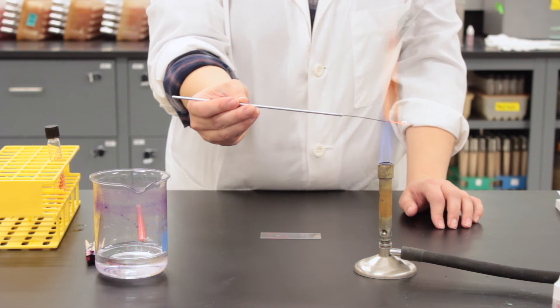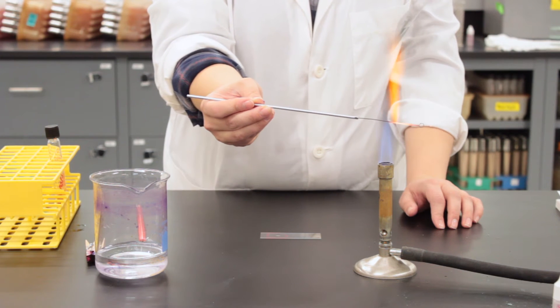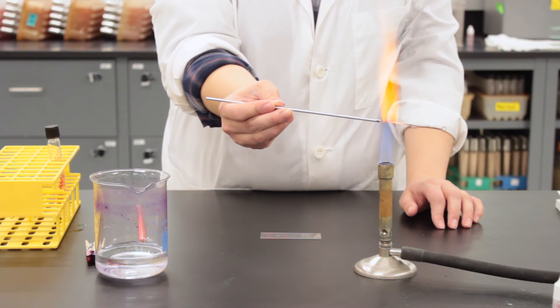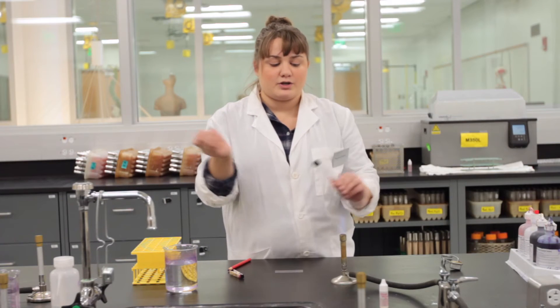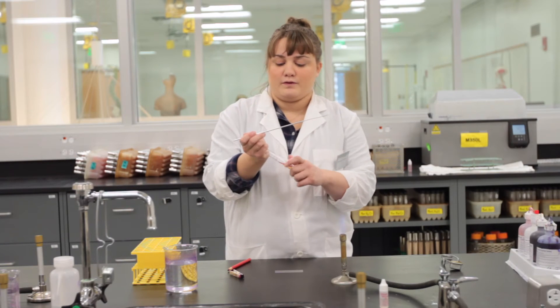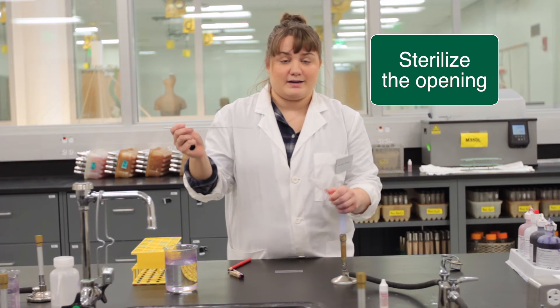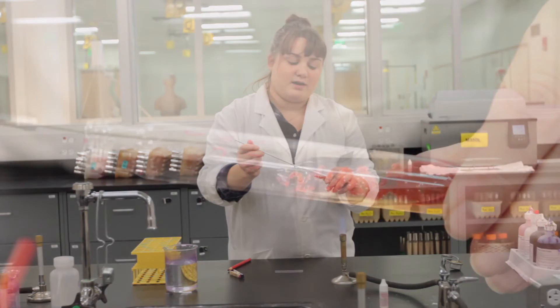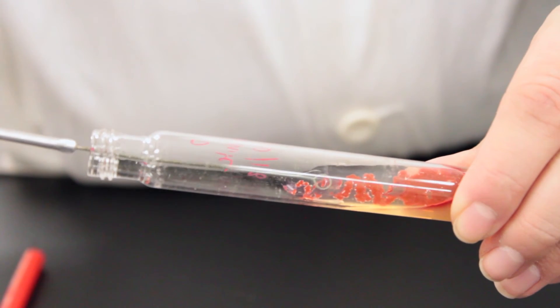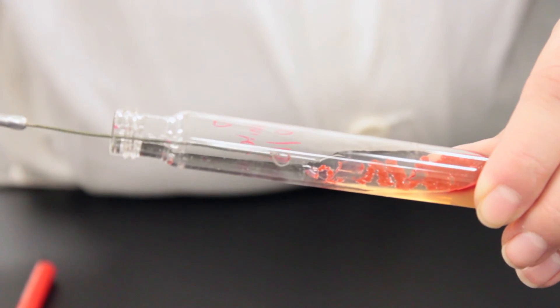Following that we will sterilize our loop again. Taking our bacterial culture, we will remove the top, send it through the flame, and then the inoculating loop will grab the bacteria.